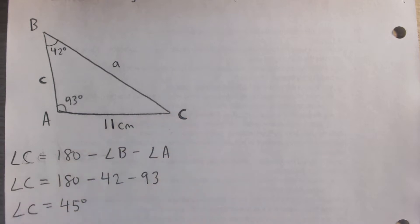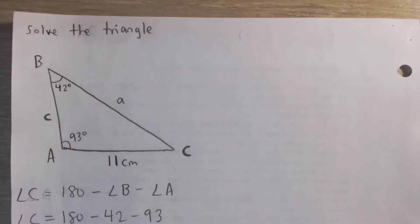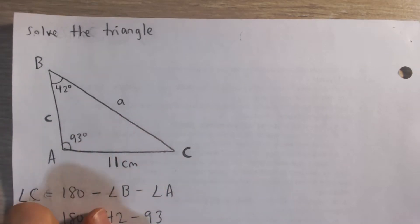You can see that kind of makes sense. It looks kind of like a 45 degree angle. Now how do we figure out the sides, the two sides, a and c?